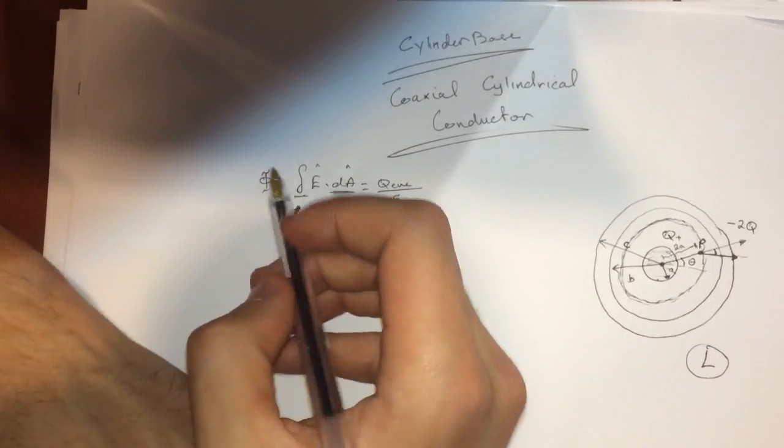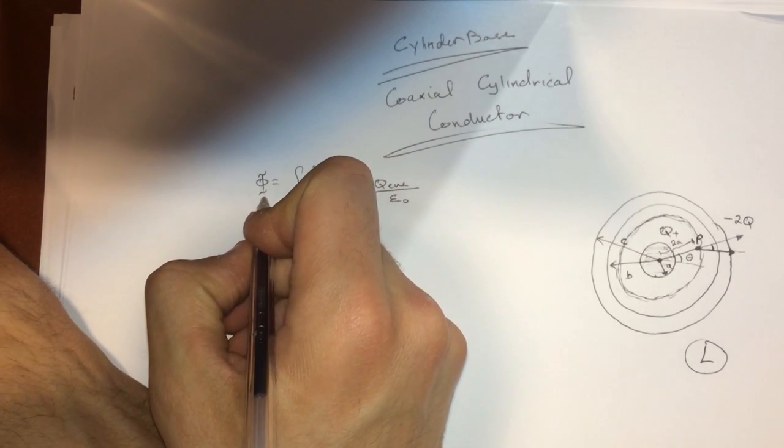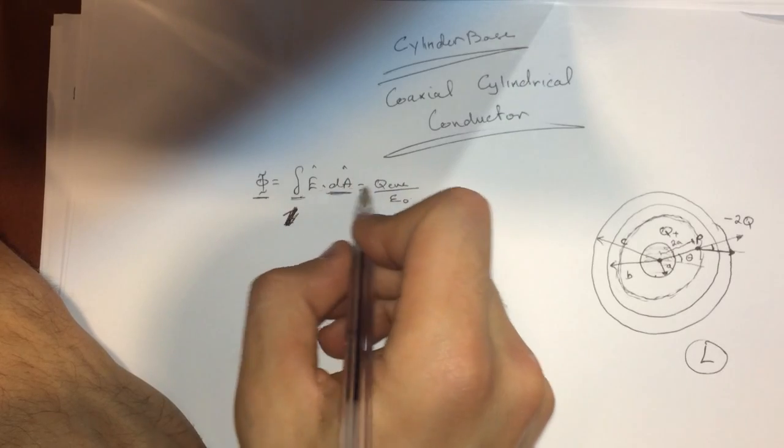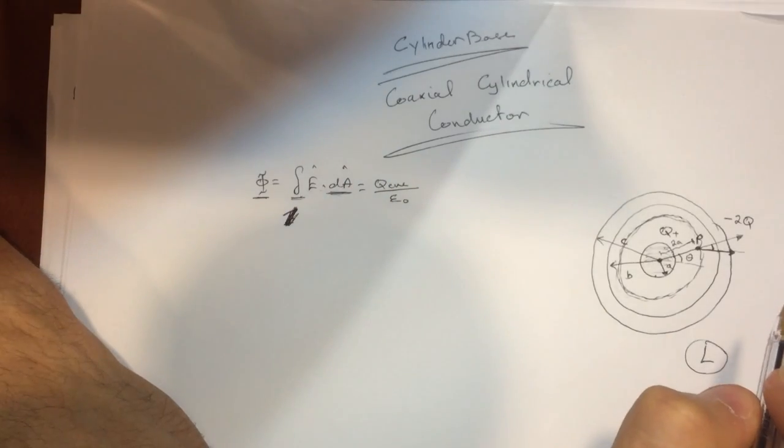Let's start by writing this, which is that the flux will be equal to the integral of E dot dA equal to the charge enclosed divided by epsilon naught.